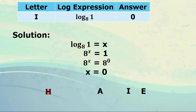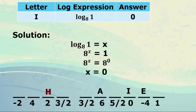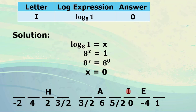For letter I, the expression is log of 1 to the base 8. We let log of 1 to the base 8 equal x, so 8 raised to x equals 1. Any base raised to 0 equals 1, so 8 raised to x equals 8 raised to 0, meaning x equals 0. The answer is 0, and we write letter I.